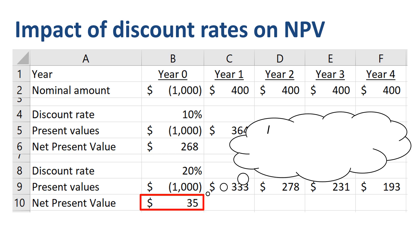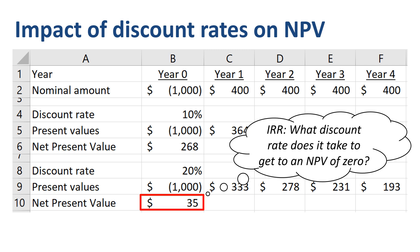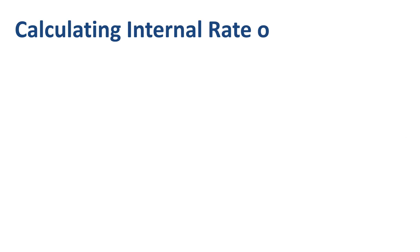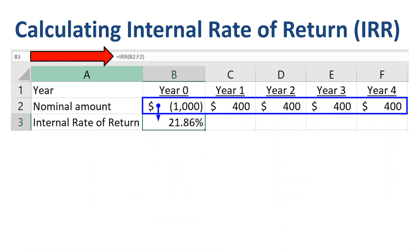IRR takes those if-then examples to their logical conclusion. What discount rate does it take to get to an NPV of zero? The fast way of calculating IRR is to use Excel. The IRR formula in cell B3 takes the values in cells B2 through F2 and calculates the IRR percentage.